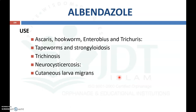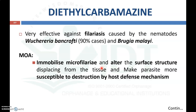Important uses of albendazole: as mentioned before, this is a broad-spectrum anthelmintic, so it can be used for the treatment or expelling of different worms like ascaris, hookworm, enterobius, trichuris, tapeworm, and strongyloides, trichinosis, neurocysticercosis, and cutaneous larva migrans.